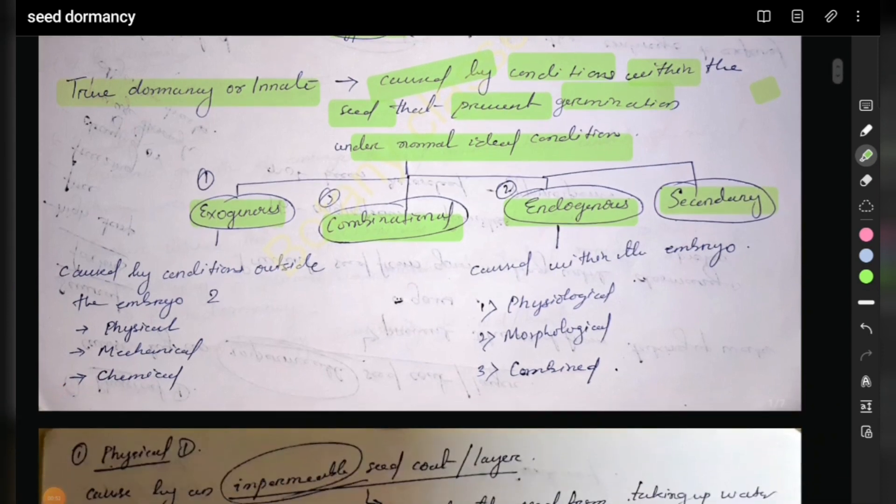Exogenous dormancy is created by conditions outside the embryo. Types include physical, mechanical, and chemical. Endogenous includes physiological, morphological, and combined. This is an important examination point.